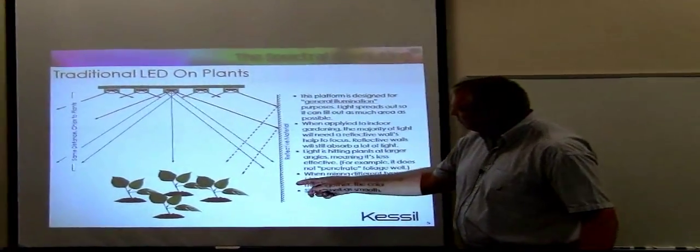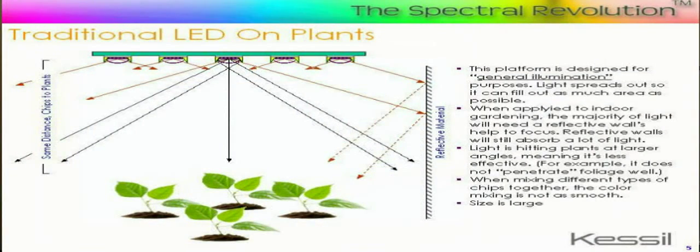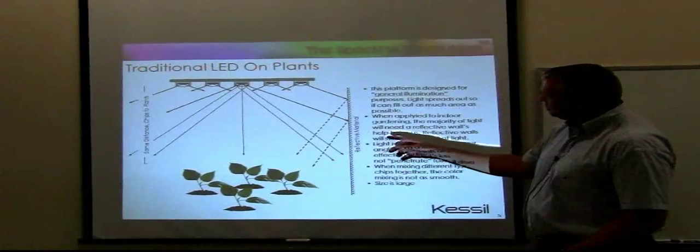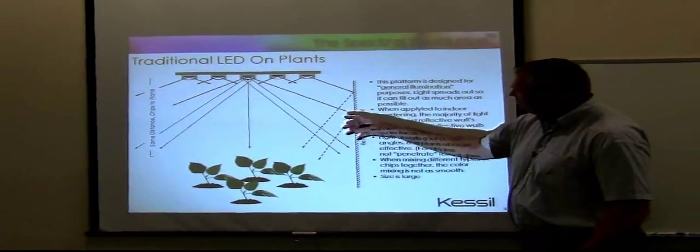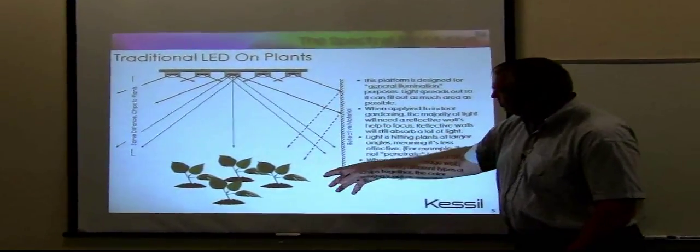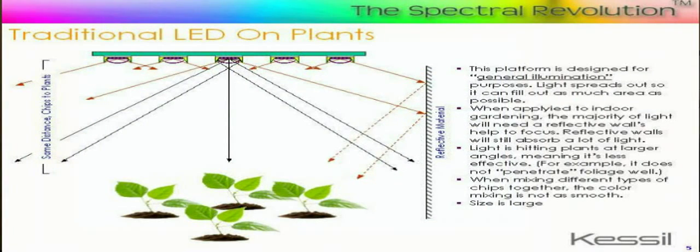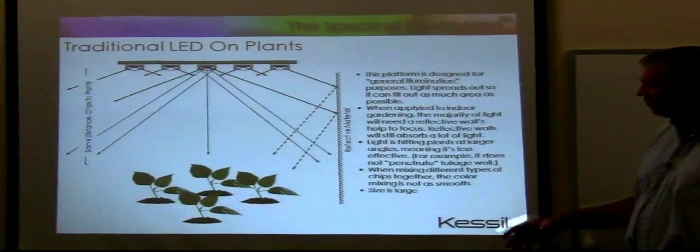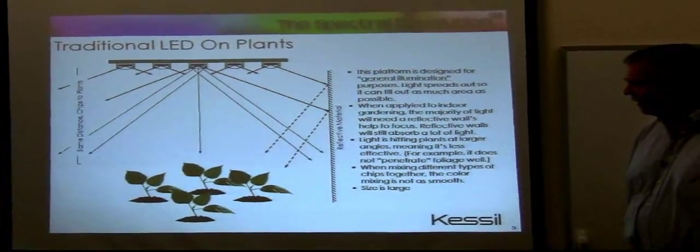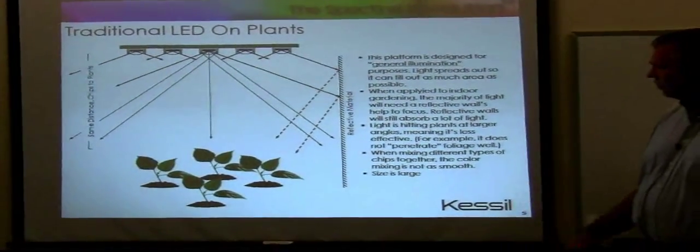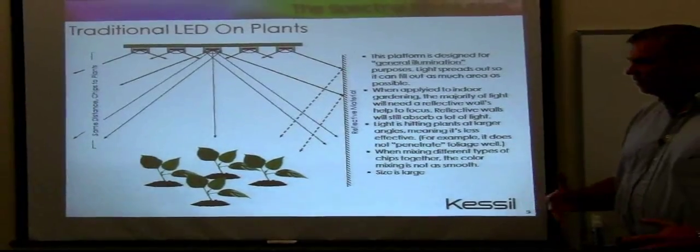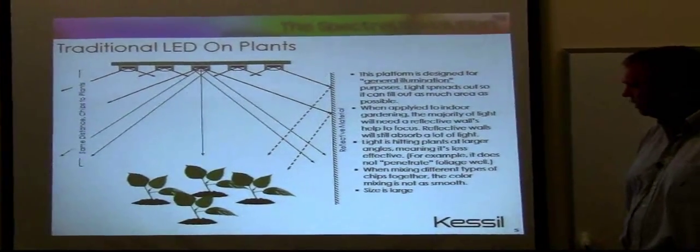Even if you put reflective material of some kind to build artificial walls around a plant growing area, that will serve to partially direct some of the wide angle light back toward the plant, but with a tremendous loss of efficiency. Light is hitting the plants at fairly high angles. That tends to be not very good for penetration of the light into the surfaces of the plant and the foliage.